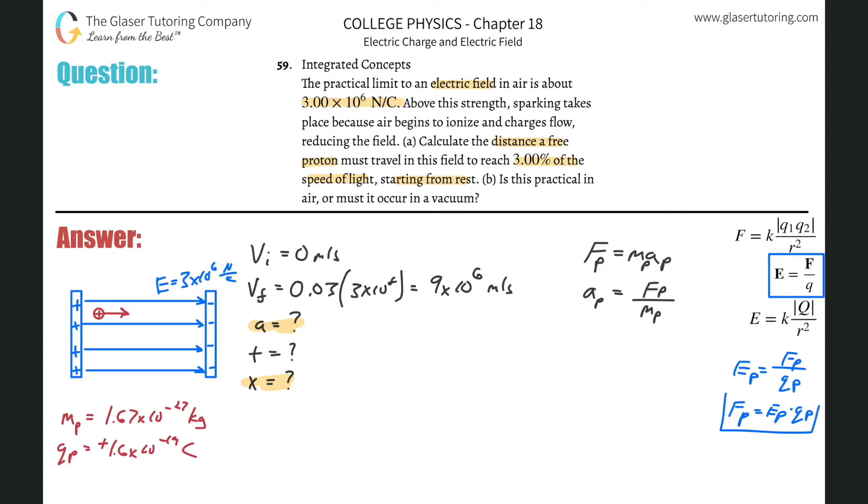Now I have everything I kind of need here to solve for a, right? Because we know that this force of the proton is the same as this, right? So I can just do a little substitution here between the two. So let's do it. So we have the acceleration of the proton will be equal to the electric field that that proton is experiencing multiplied by the charge of that proton all divided by the mass of that proton. And voila, now we have everything, right?